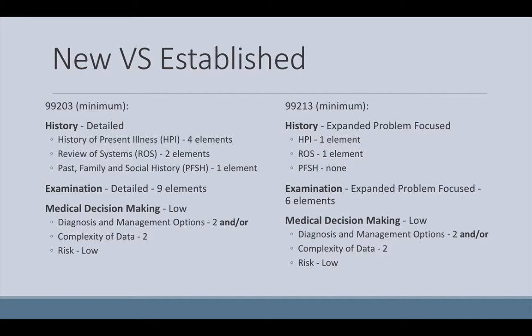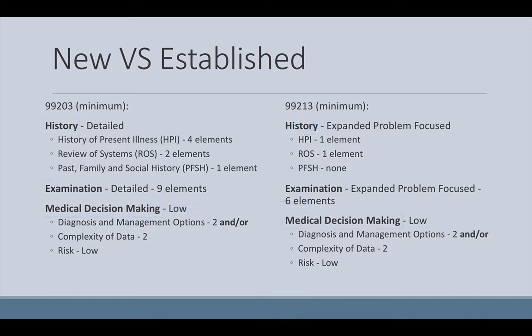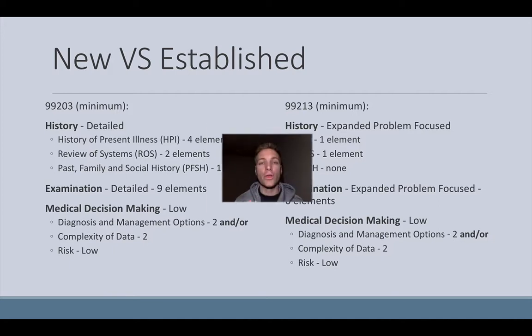That's why new versus established patients are really important for your practice, your coding, and your documentation. For new patients, we score all three levels — history, examination, and medical decision-making are all important. For established patients, only two of the three matter, and we always want to use medical decision-making as one of our guides. You use medical decision-making and history, or medical decision-making and examination, when scoring your established 99 codes. That's how 99 codes versus 92 codes can impact the practice directly and make a significant difference in the reimbursement fees that insurance companies assign to each code.